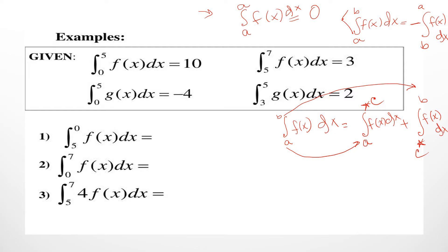Now look at the given data and solve the three examples. The first question says from 5 to 0, f(x) dx. Look at the data — you have 5 and 0, but their positions are different. Here 5 is the lower limit in the question, but in the given data 5 is the upper limit.